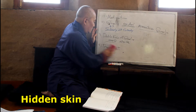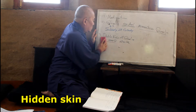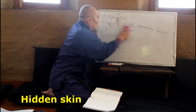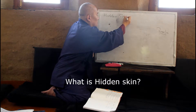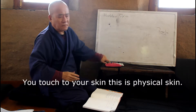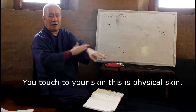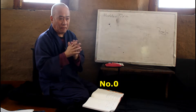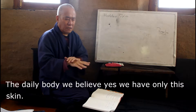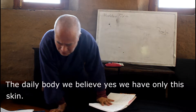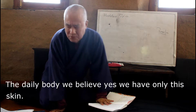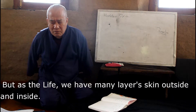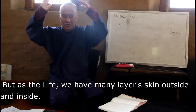Today we have a little bit of a new neuron with opening hidden skin. What is hidden skin? You touch it with your skin. This is physical skin, number zero. Daily body, we believe we have only this skin, but as a life, we have many, many layers of skin outside, inside.